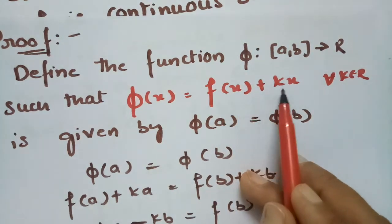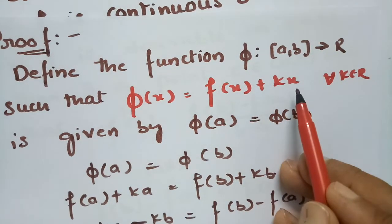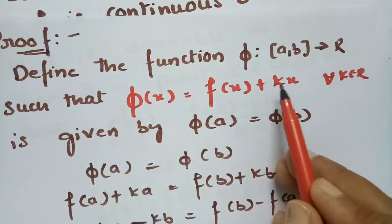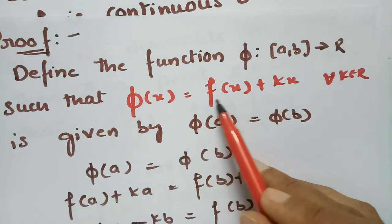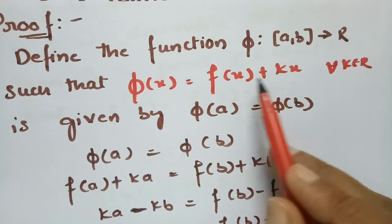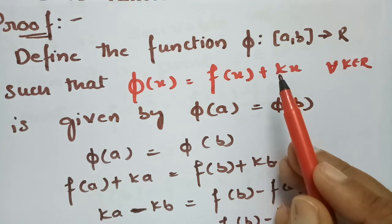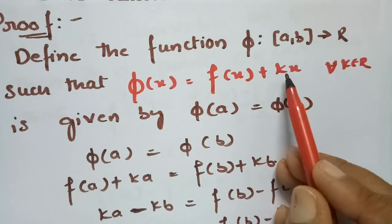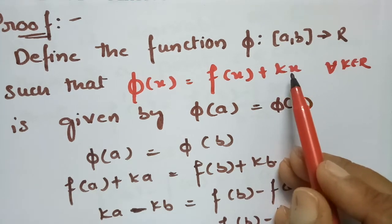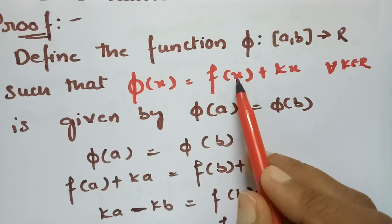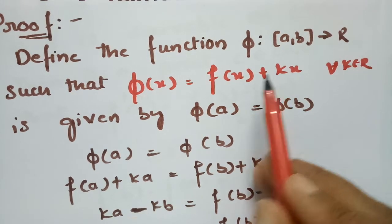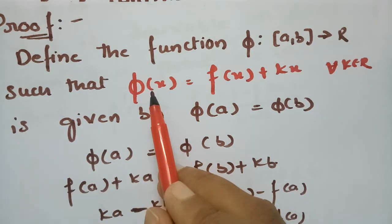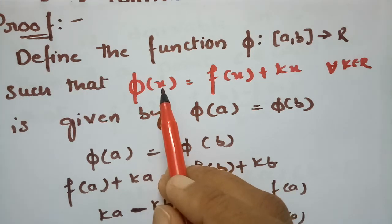The function φ(x) = f(x) + kx. Since x is an algebraic function, it is continuous on closed [a, b], and k is a constant so kx is also continuous. Since f(x) is already continuous, the sum of two continuous functions is again continuous, so φ(x) is continuous on closed [a, b]. Similarly, algebraic functions are derivable, multiplying by constant k keeps it derivable, and f(x) is given to be derivable, so φ(x) is derivable on open (a, b).